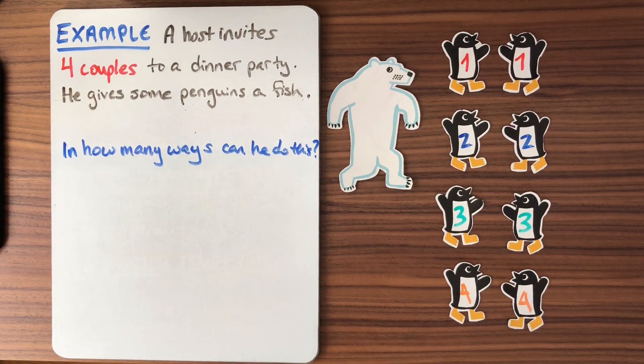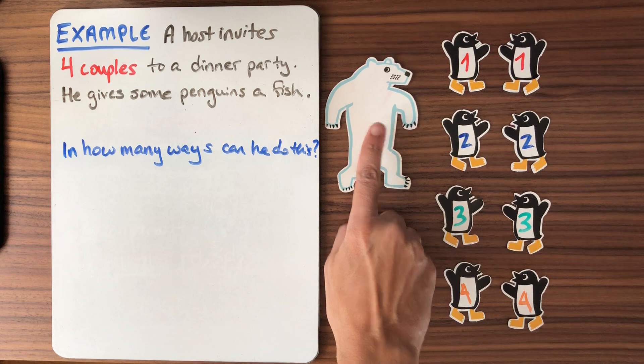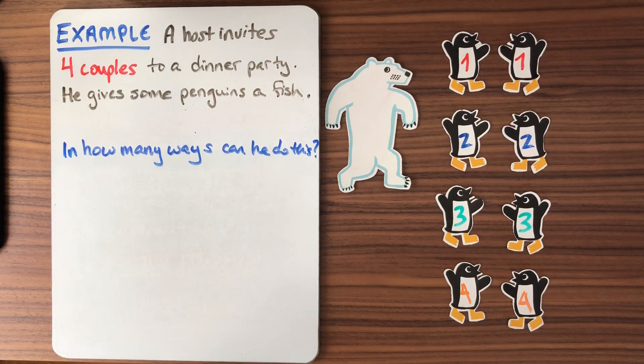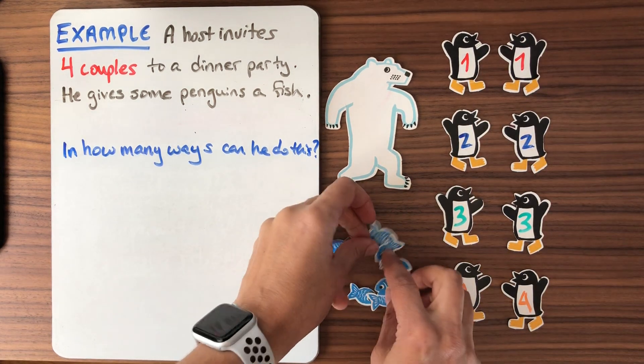Welcome back to Math 432. We're talking about choice. So here is our example, our last example for this series. A host invites four couples to a dinner party. He gives some of the guests fish.